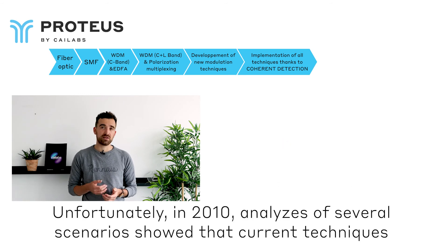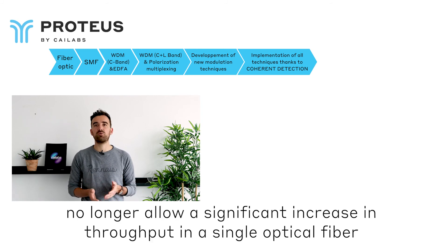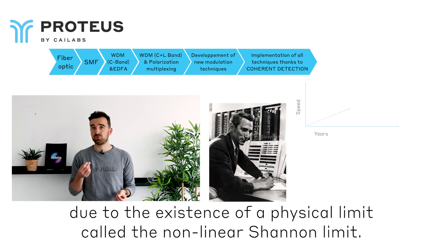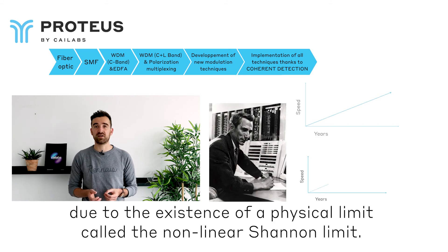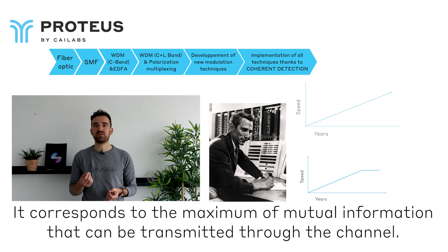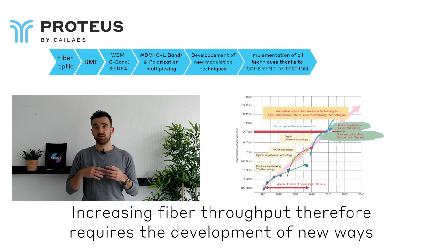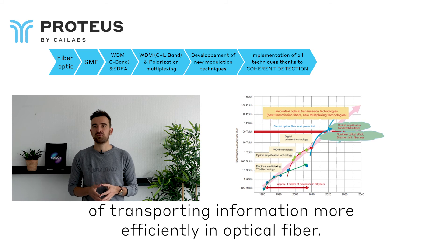Unfortunately, in 2010, analysis of several scenarios showed that current techniques no longer allow a significant increase in throughput in a single optical fiber, due to the existence of a physical limit called the non-linear channel limit. It corresponds to the maximum mutual information that can be transmitted through the channel. Increasing fiber throughput therefore requires the development of new ways of transporting information more efficiently in optical fiber.